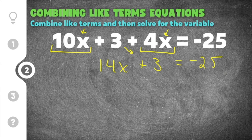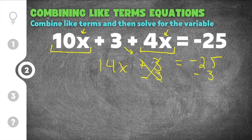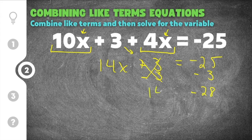The second step is to get all constants on one side and variables on the other. We have 14x on the left, so we need to move the plus 3 to the other side. We do the opposite of plus 3, which is minus 3, so they cancel. On the other side we also subtract 3: negative 25 minus 3 is negative 28. Bringing down 14x and the equal sign, we now have 14x equals negative 28.